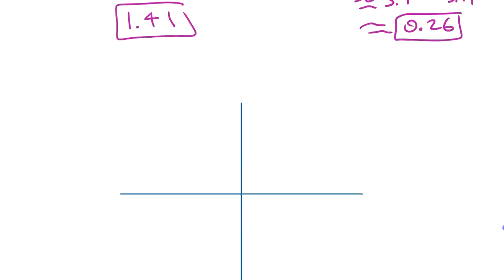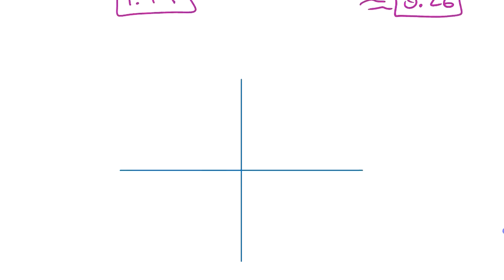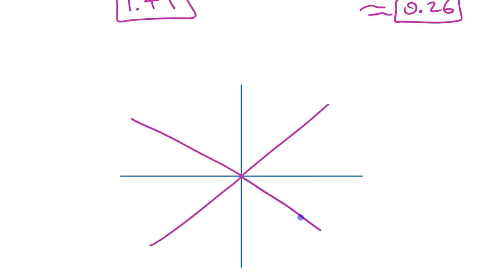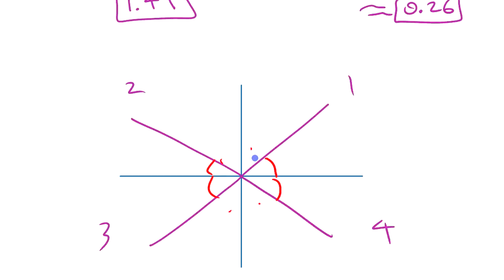So that's finding the reference angle for both degree measures and radian measures. The thing to remember — just as a visual picture in your mind — is that no matter where the angle is, whatever quadrant it's in — 1, 2, 3, or 4 — it's always the angle with the x-axis.